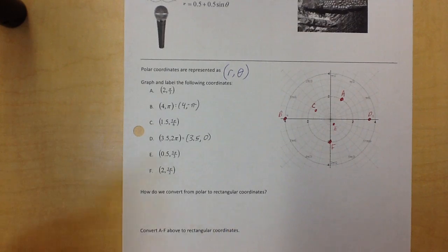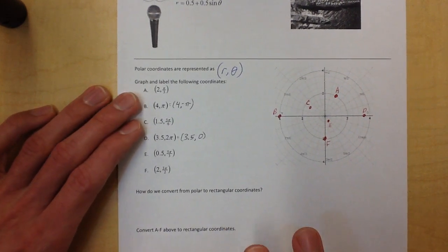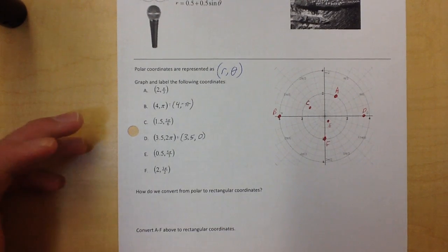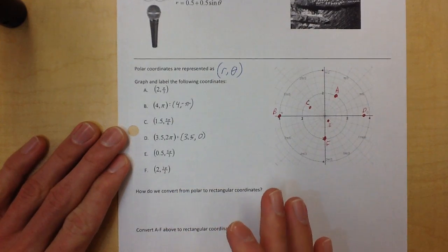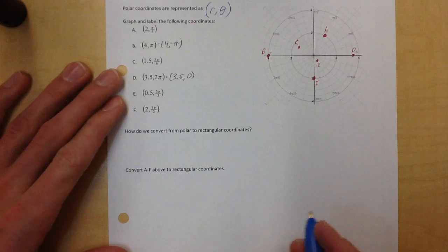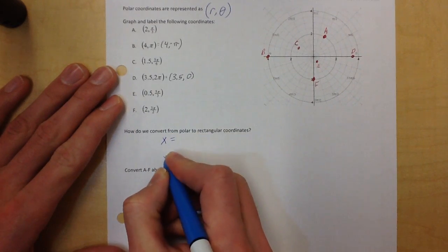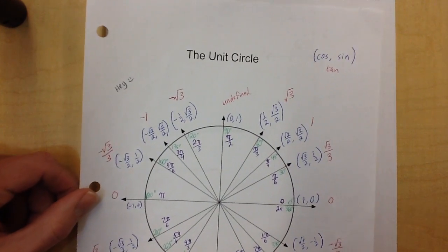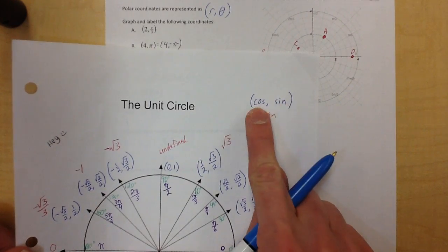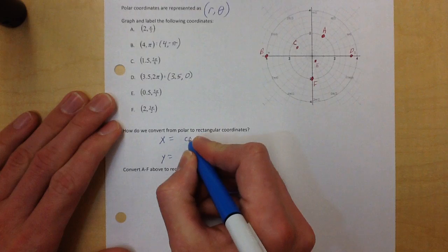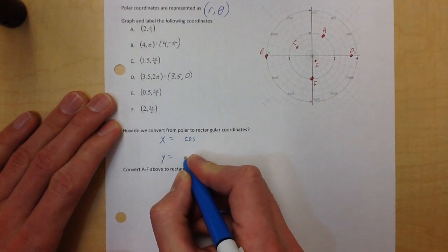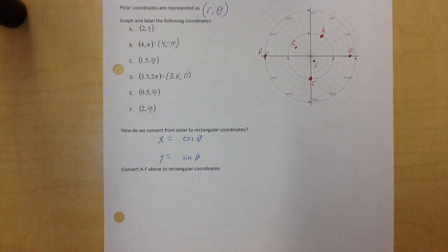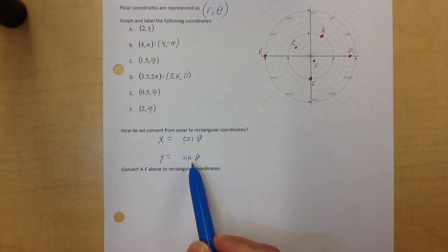How do we convert from polar to rectangular coordinates? There are two formulas you need to remember. Once you memorize this, you've got it. So x equals and y equals. Remember when we did the unit circle — cosine comma sine gave x then y. So x is cosine of theta and y is sine of theta. But it's not just cosine theta and sine theta.